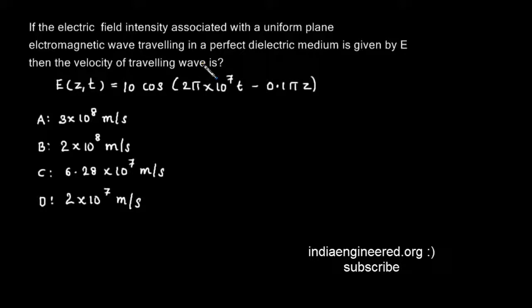We must know the expression for velocity of the traveling wave: v equals omega by beta. Omega is the frequency in radians and beta is the phase constant. So we must find out the value of omega and beta to find out the velocity of the traveling wave.